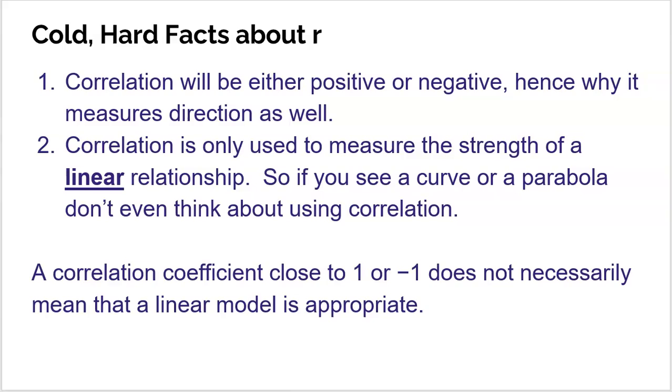All right, a couple more cold, hard facts about R. A couple of these things I've already mentioned, but I want to mention them again. Correlation can either be positive or negative, hence why it does measure direction. It does, in fact, measure direction. That's one of the parts of the definition of R. Correlation is only used to measure the strength of a linear relationship. So if you see a curve or a parabola, don't even think about using correlation. You just wouldn't use it.